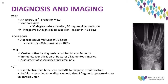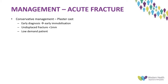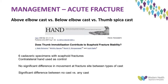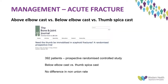Looking at management of acute fractures: conservative management is indicated in early diagnosis with early mobilization, undisplaced fractures of less than one millimeter, and in a low-demand patient — for example, the non-dominant hand in an older patient who works a desk job. Regarding cast type, a study in the Journal of Hand Surgery America (2008) on six cadaveric specimens found no significant difference in movement at the fracture site between cast types, but a significant difference between no cast versus any cast.